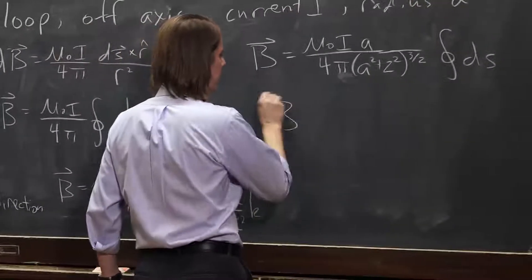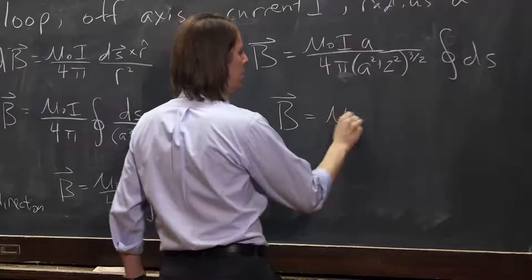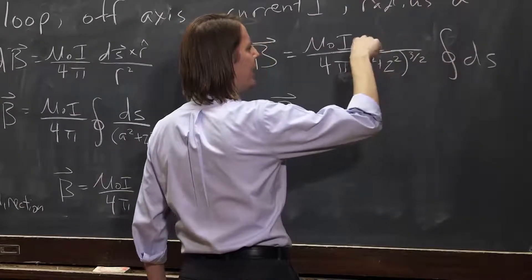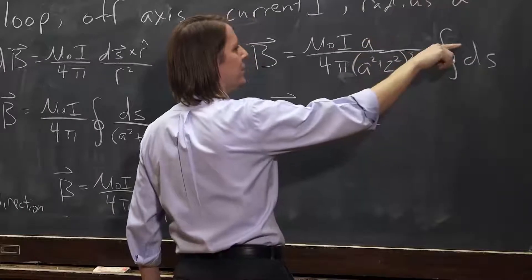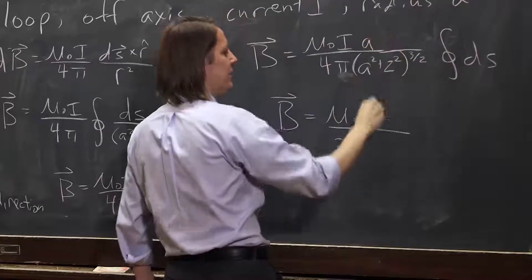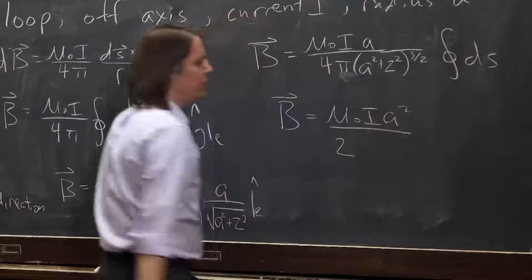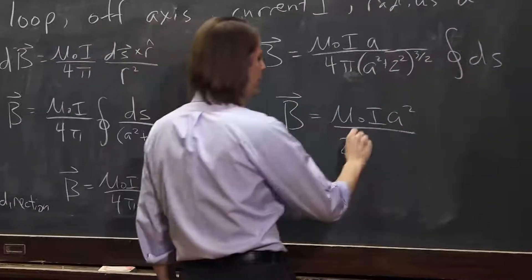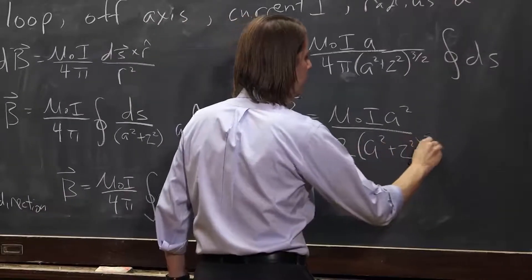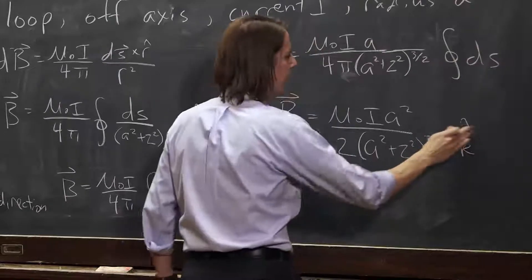So b, then, is mu naught i 2 pi a. So 2 pi is up here. The 2 pi is going to cancel that 4 pi. And just leave you with the 2 down here. That a is going to square that a. Mu naught i a squared over 2 times a squared plus z squared to the three halves all in the k-hat direction.